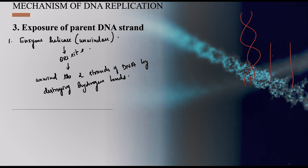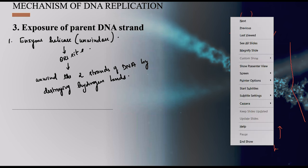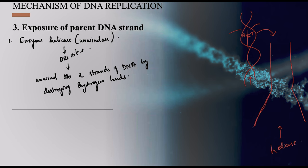The nitrogen bases are held together by hydrogen bonds — for example, A pairs with T via two hydrogen bonds. When these hydrogen bonds are destroyed, the DNA unwinds. When it gets unwound, the DNA forms a Y-shaped structure called the replication fork, also known as the Y-fork.